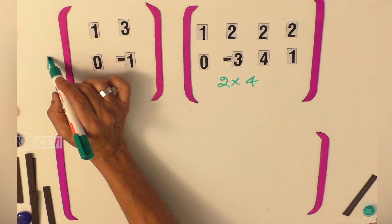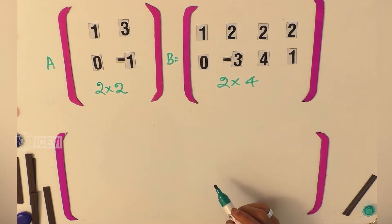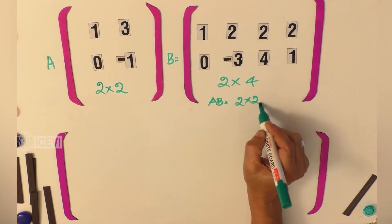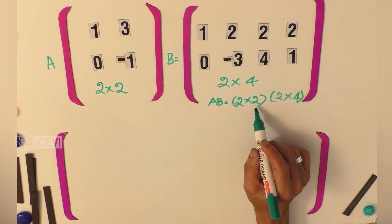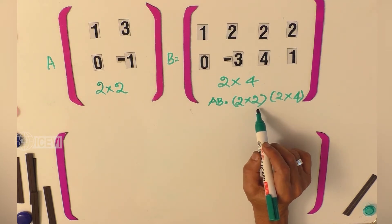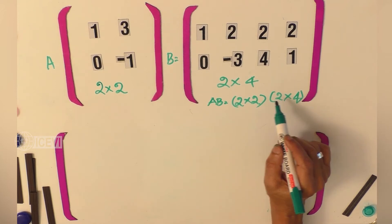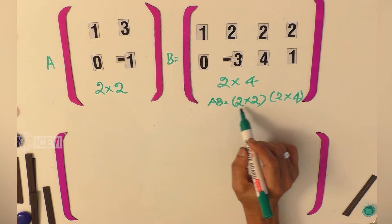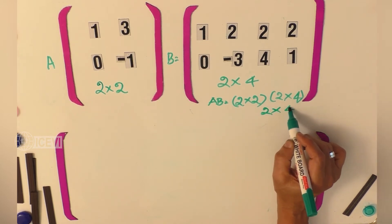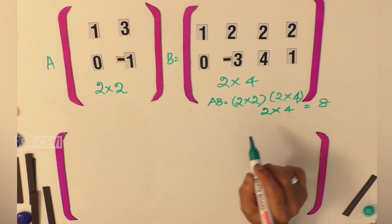Let us take matrix A with 2 by 2 order and matrix B as 2 by 4 order. The product matrix AB will be 2 by 2 multiplied by 2 by 4. We will be able to multiply because the number of columns of matrix A is 2, which is the same as the number of rows of matrix B. The total elements of the AB matrix will be 2 multiplied by 4, that is 8 — giving us 2 rows and 4 columns in the resultant matrix.